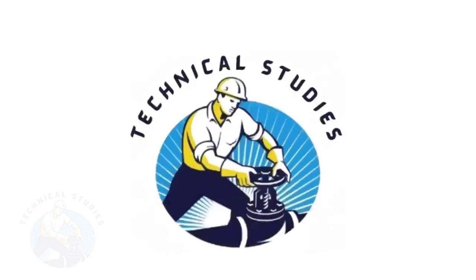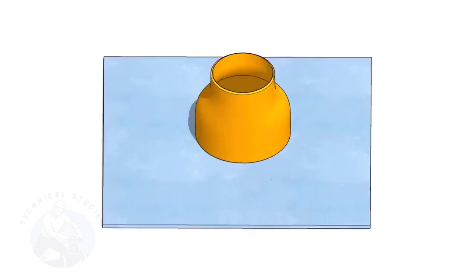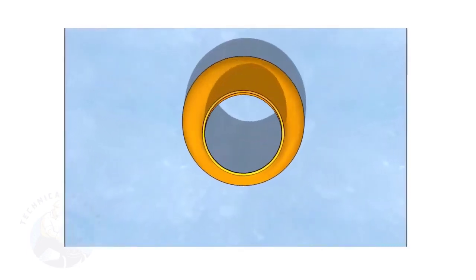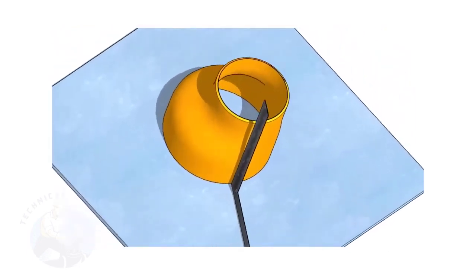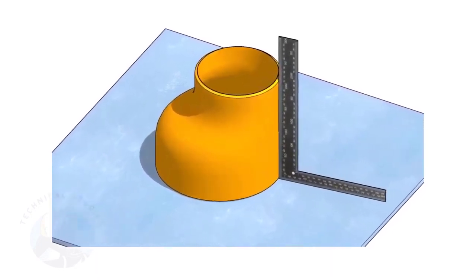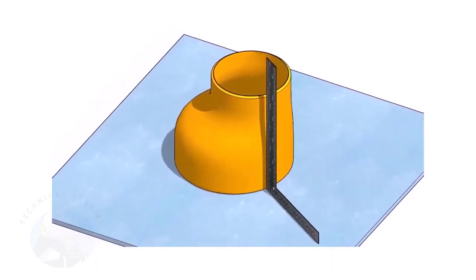Welcome to Technical Studies. Fitting an eccentric reducer to a pipe that is already fitted to another fitting like a flange, tee, elbow etc. is a little tricky.